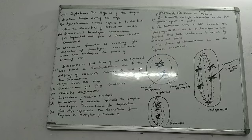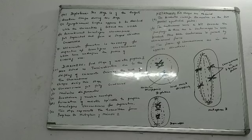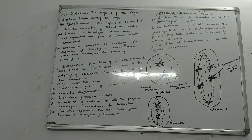Why is it called terminalization? Because the chiasmata — the X-shaped structure which was formed — it moves towards the end of the chromosome, or towards the terminal of the chromosome. That is why diakinesis is also known as terminalization. Now, all the changes which take place during this stage: